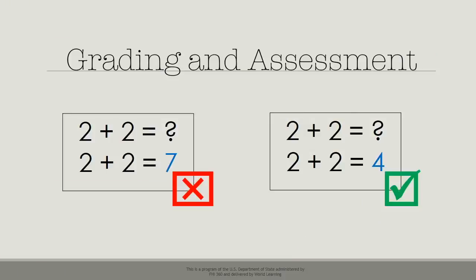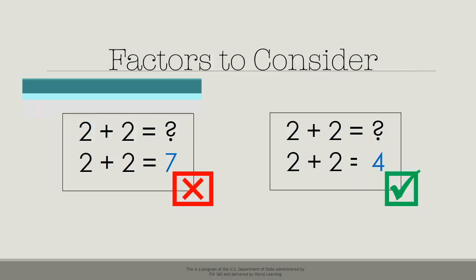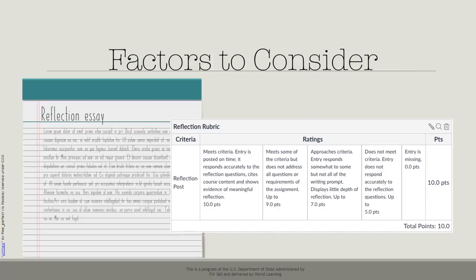Some assignments are easy to assess. When there is one right answer, grading can be fairly simple. For complex tasks, we need to consider several factors. This is when a rubric can be very useful.